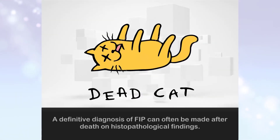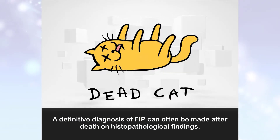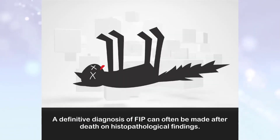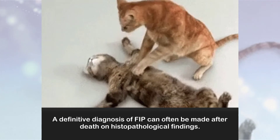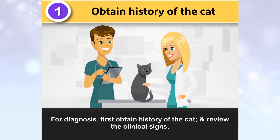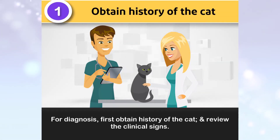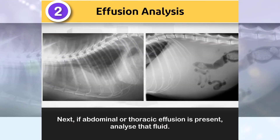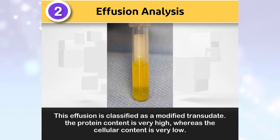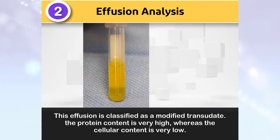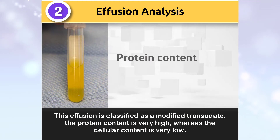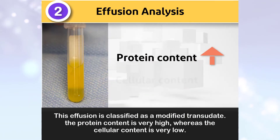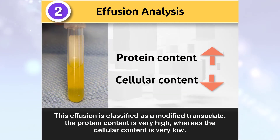A definitive diagnosis of FIP can often only be made after death on histopathological findings. For diagnosis, first obtain history of the cat and review the clinical signs. Next, if abdominal or thoracic effusion is present, analyze that fluid. This effusion is classified as a modified transudate — the protein content is very high, whereas the cellular content is very low.